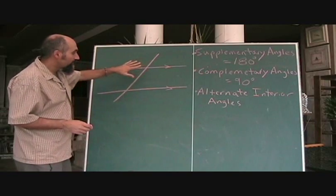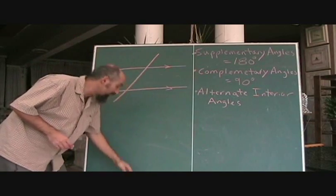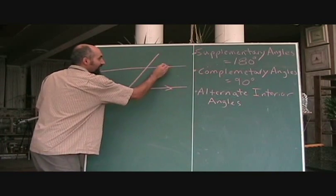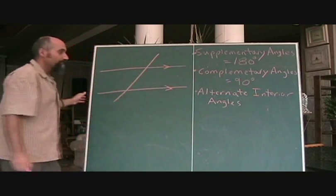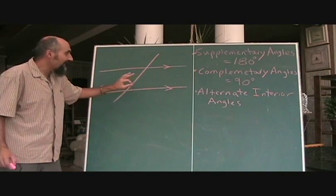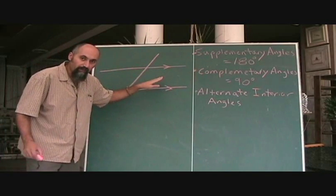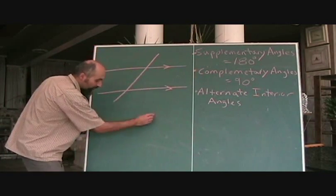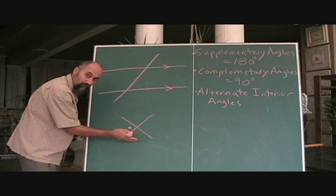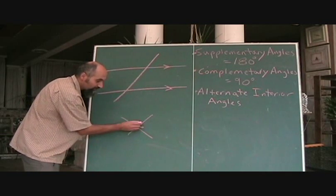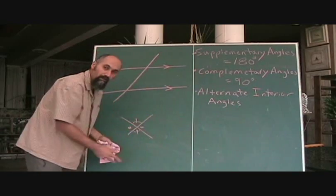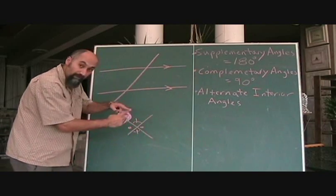One of the things used most is giving you two parallel lines and having a line go through them. As soon as you have this, there are a few very important angle relationships that come up. We've talked about vertically opposite angles before — when two lines cross, this angle equals that angle, and that angle equals that angle. That's a given regardless of whether there are parallel lines.